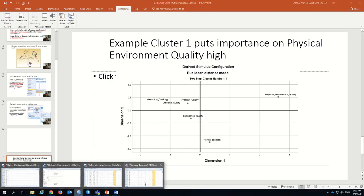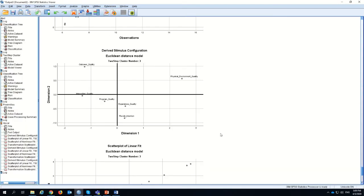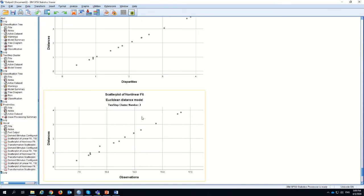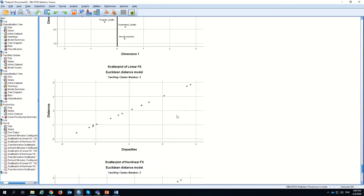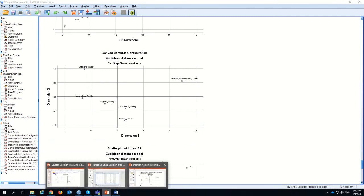If you want to look at cluster 3, cluster 3 has high physical environment quality as well. They also put a lot on outcome quality. But for them, they feel that outcome quality is also a very important thing as compared to physical environment quality. This is how you show and position your clusters.